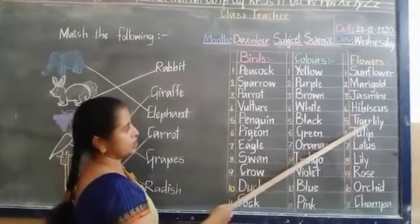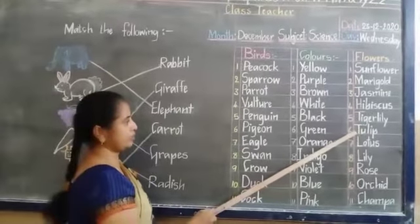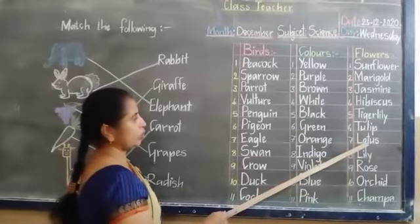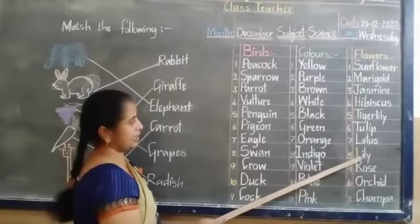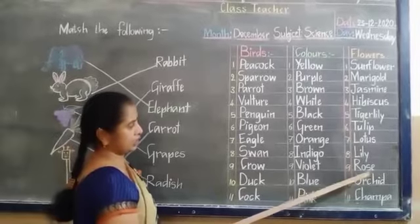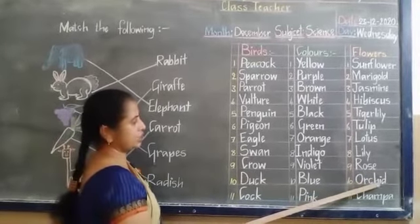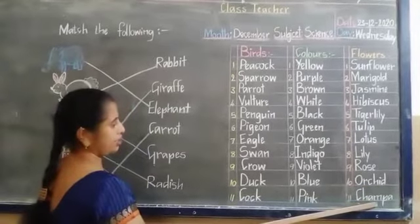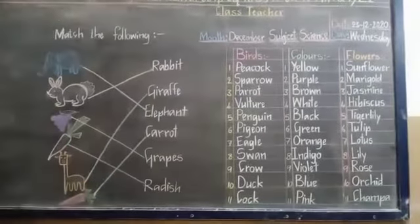Tiger lily. T-I-G-E-R L-I-L-Y. Tiger lily. Tulip. T-U-L-I-P. Tulip. Lotus. L-O-T-U-S. Lotus. Lily. L-I-L-Y. Rose. R-O-S-E. Rose. Orchid. O-R-C-H-I-D. Orchid. Champa. C-H-A-M-P-A. Champa.